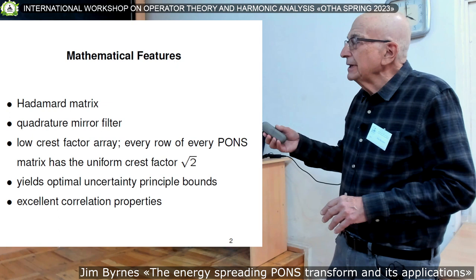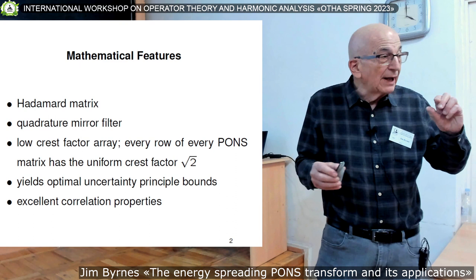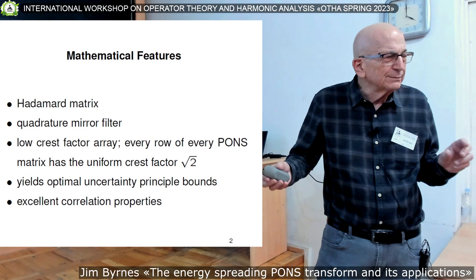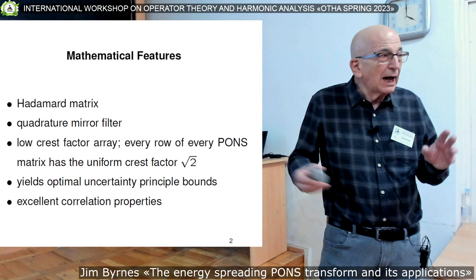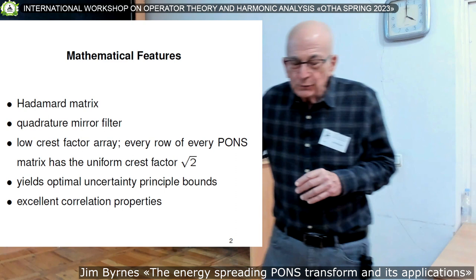All of the rows in pairs of a PONS matrix are quadrature mirror filters. You've probably never heard that expression — it's somewhat important in digital signal processing, and I'll say very briefly what that is when it comes up.